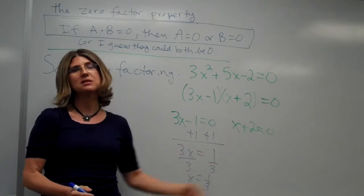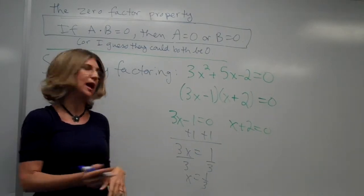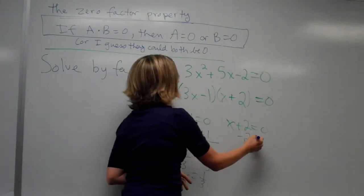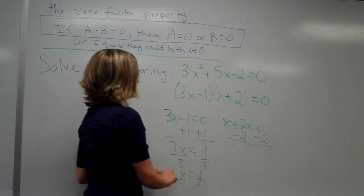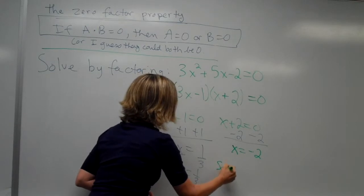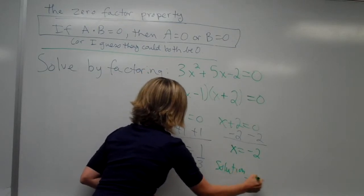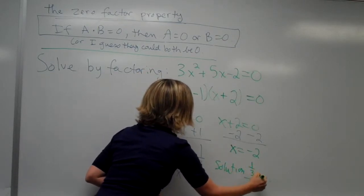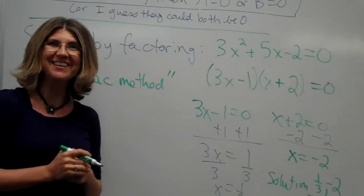Now, since x plus 2 is 0, we want to undo adding 2 to x. So we subtract 2. Of course, in math, we do that on both sides, which gives us x is equal to negative 2. So our solution is 1 third and minus 2. Did you get that? Good job, class.